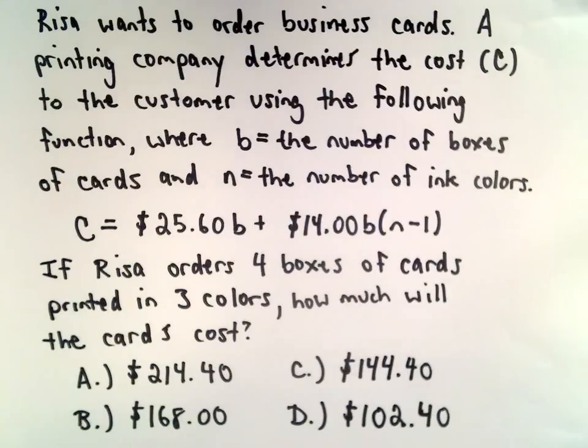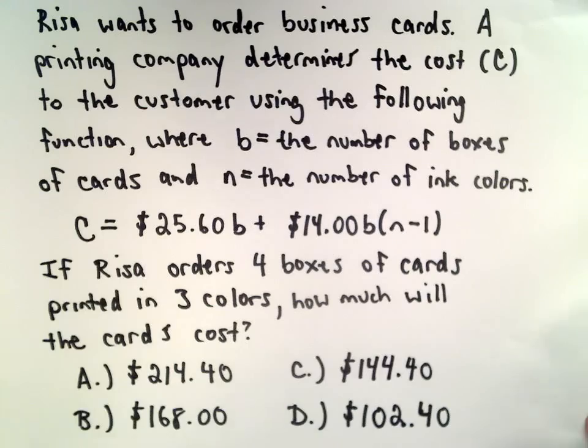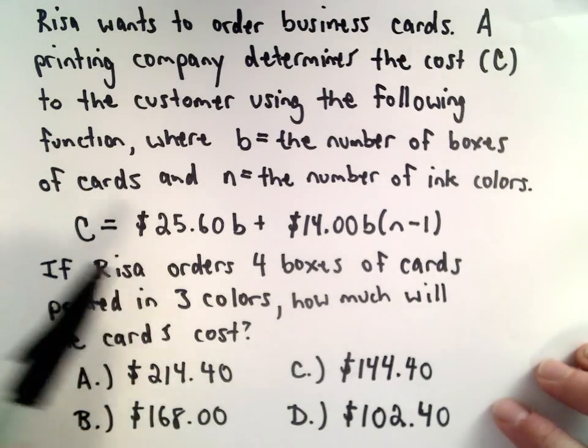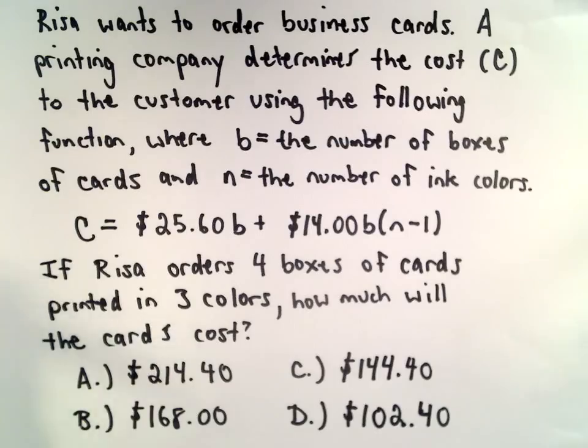Risa wants to order some business cards, and a printing company determines that the total cost C to the customer by using the following function, where B represents the number of boxes of cards, and N is the number of ink colors used.